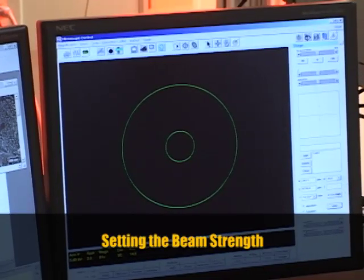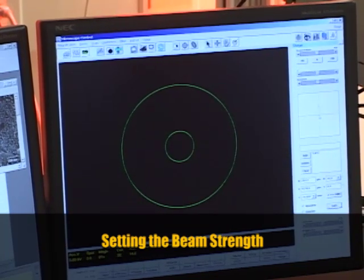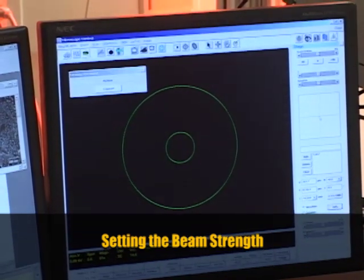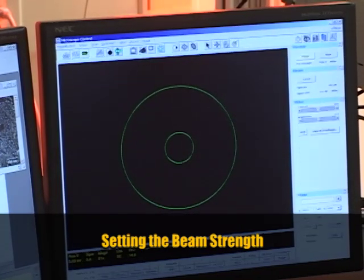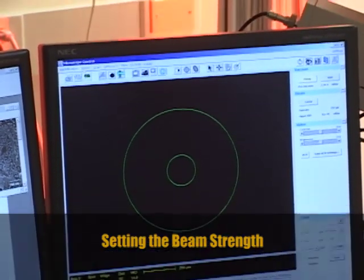While the chamber is pumping down, you can do two things. The first is you want to center the sample on the stage. And the second thing you want to do is set the beam conditions that you're going to use to image the sample.